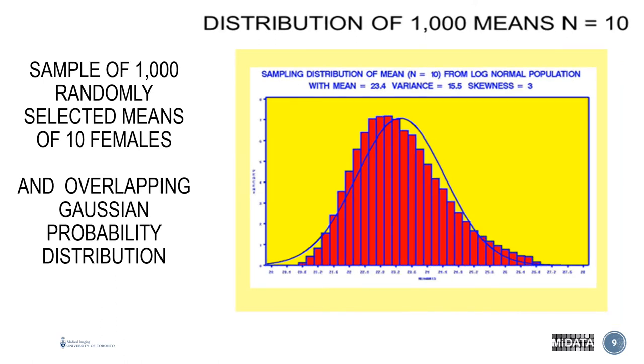When we look at now the distribution of the thousand means of sample size 10 we immediately see once again that the center of the data is coming closer to the center of the normal or Gaussian curve which would imply that the skewedness, the positive skewedness, is lessening.